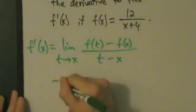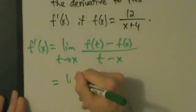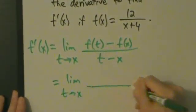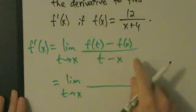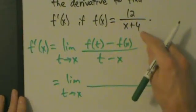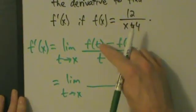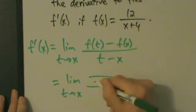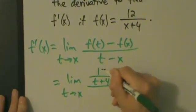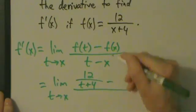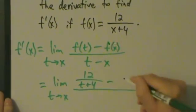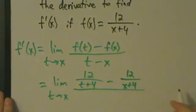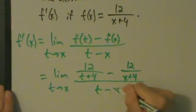So the next step is to write the limit as t approaches x. What's f of t? Well, if f of x is 12 over x plus 4, then f of t is 12 over t plus 4. And f of x we know is 12 over x plus 4. On the bottom we still have t minus x.